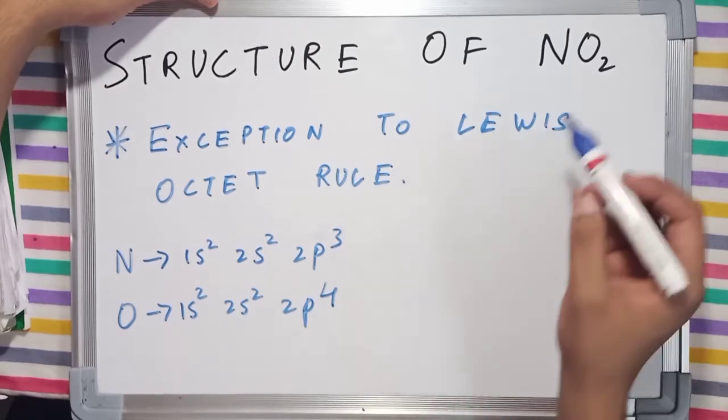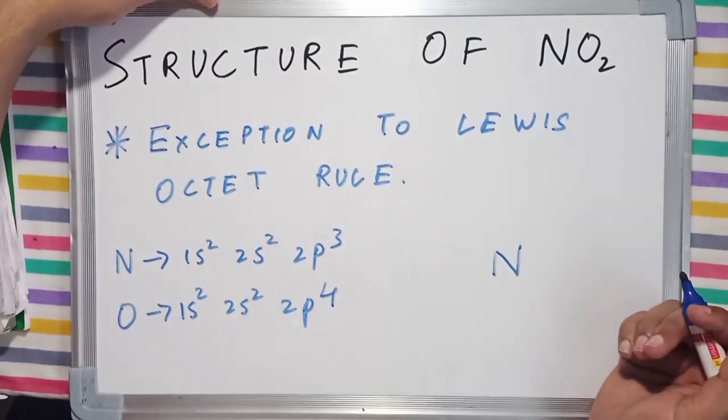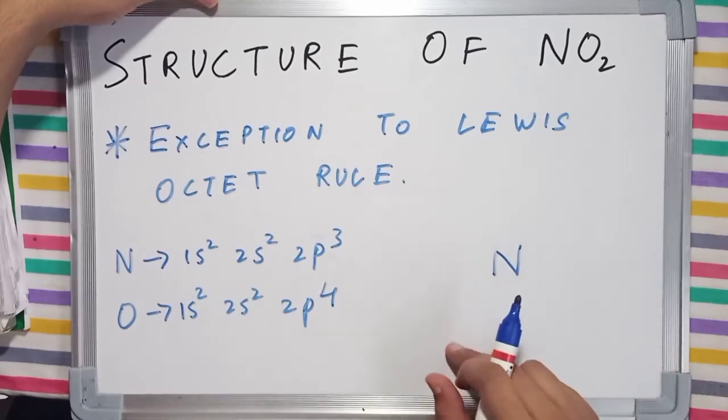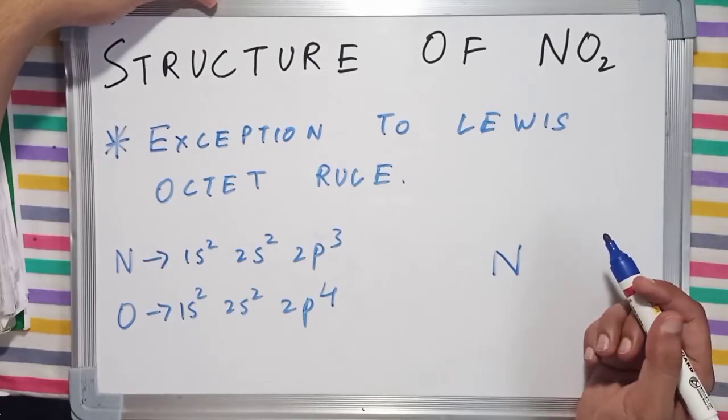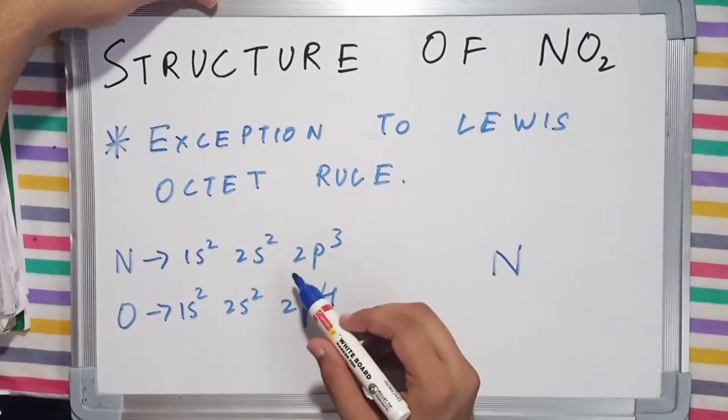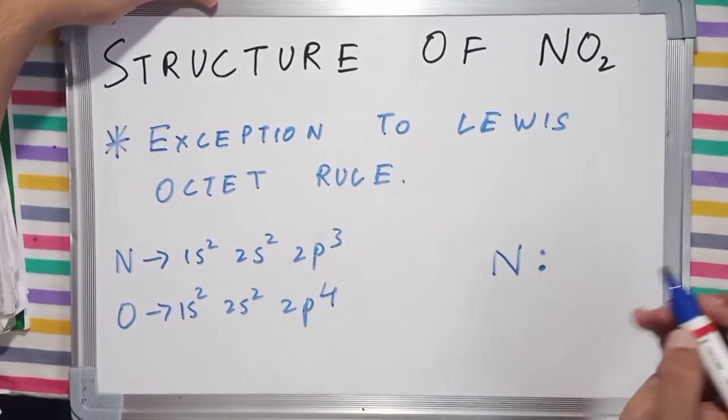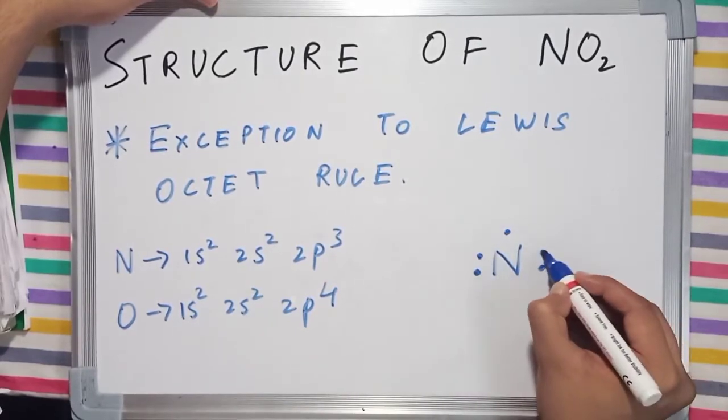Our central atom is nitrogen. So let's draw nitrogen. Nitrogen makes 3 bonds generally, and in special cases it makes 4 bonds in which the 4th bond is a coordinate bond. It has 5 valence electrons: 1, 2, 3, 4, 5.